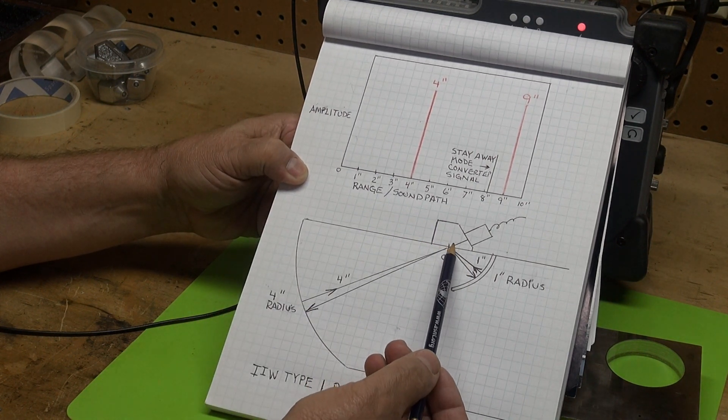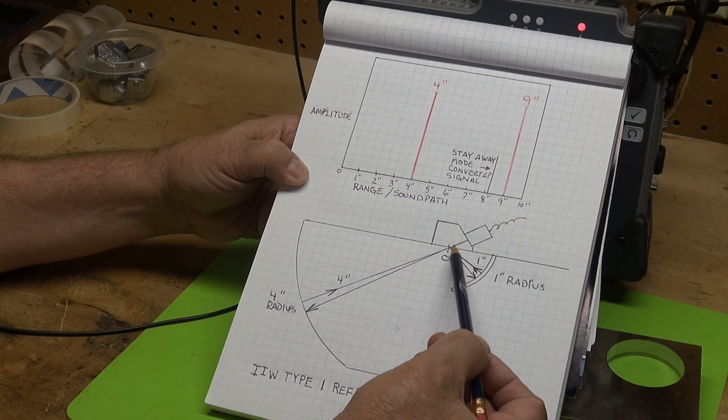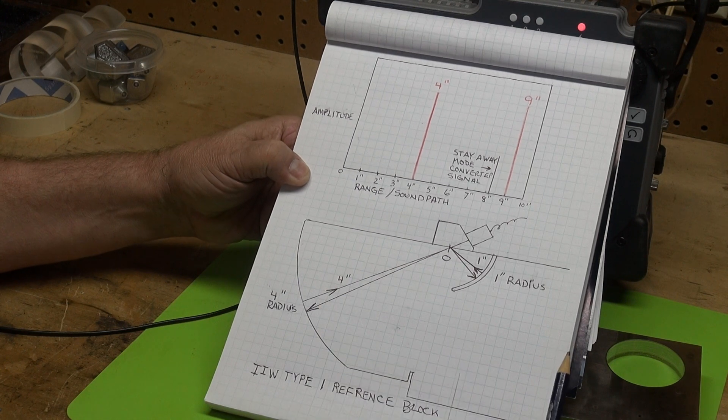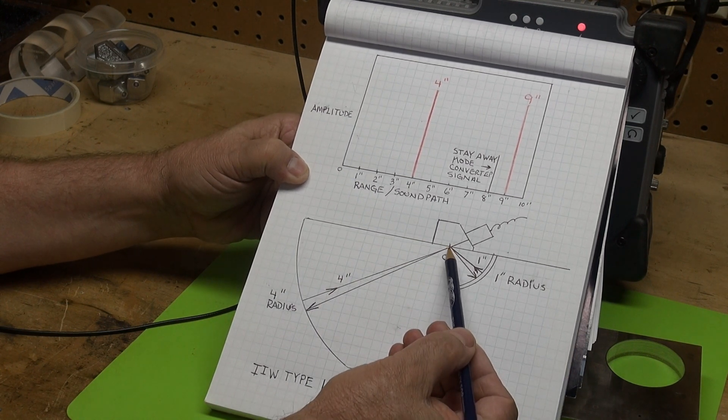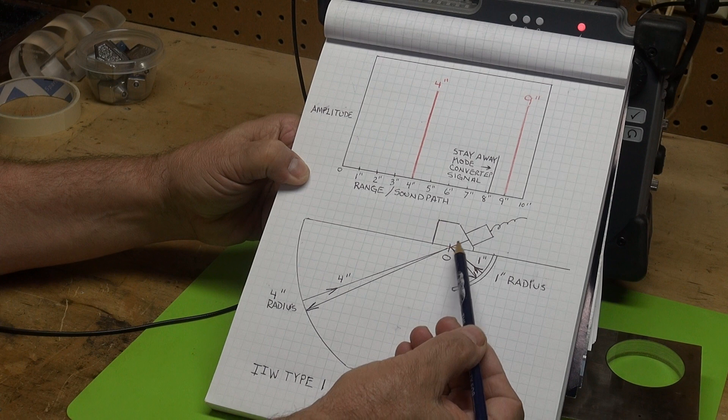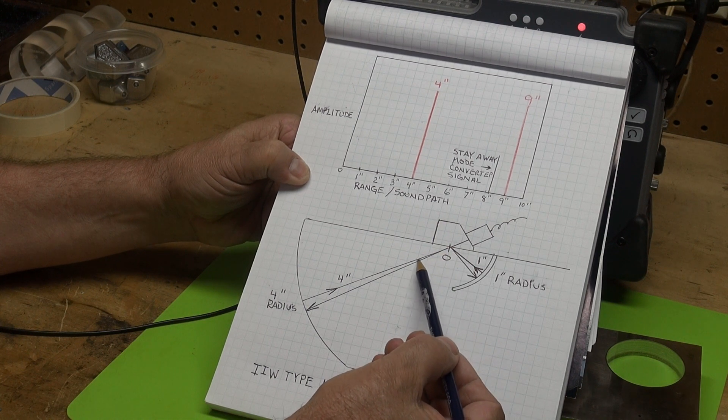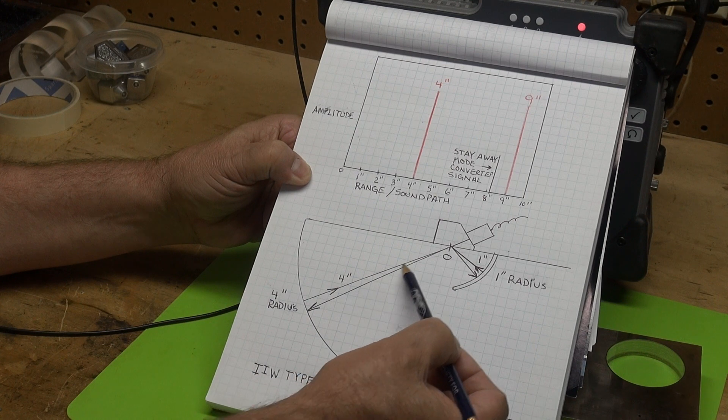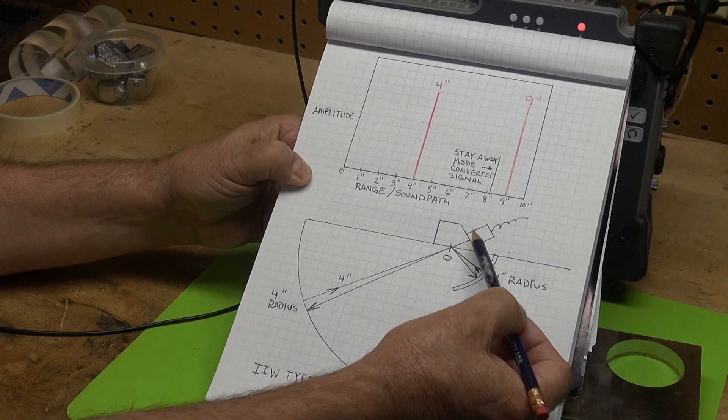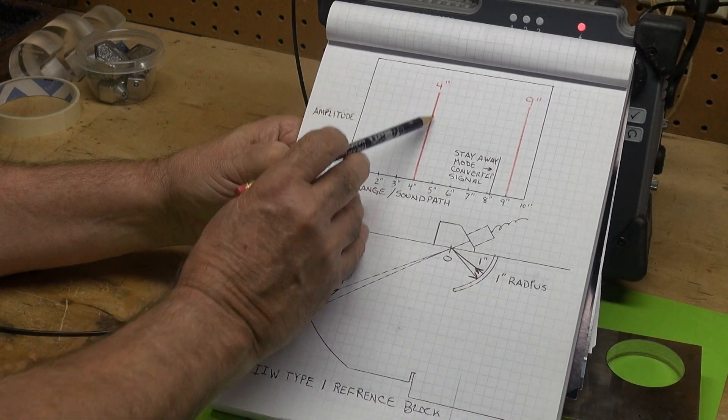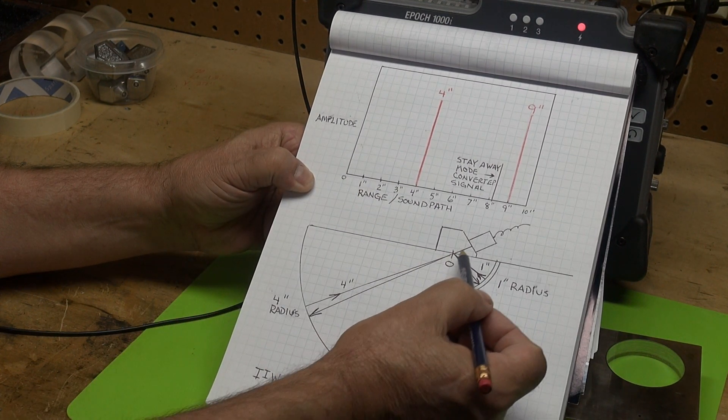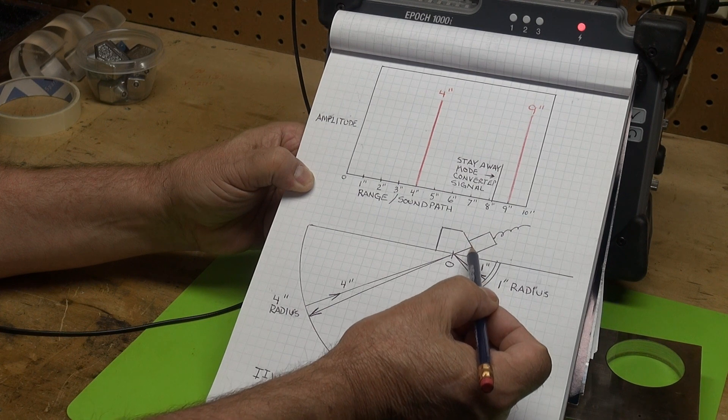So if we have a transducer on here and our sound path is pointing this direction, this is an exaggerated picture, but that sound energy will come out, strike this 4 inch radius, come back. And when it comes back it will record 4 inches on your screen because it hits at 4 inches and hits perpendicular to our transducer.